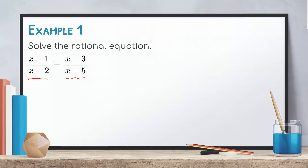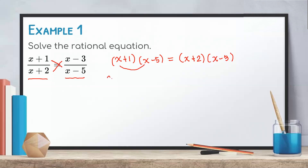Therefore, we will have (x + 1)(x − 5) equals (x + 2)(x − 3). We simply need to multiply the two binomials. So we will have: x times x is x squared, x times negative 5 is negative 5x, positive 1 times x is positive x, and positive 1 times negative 5 is negative 5.